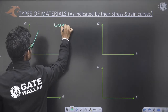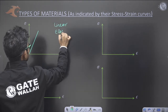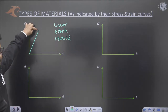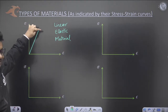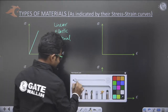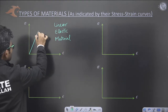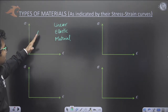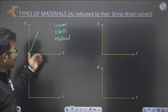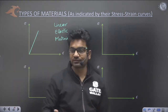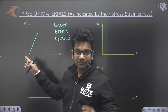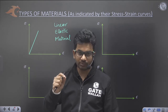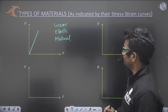In a linear elastic material, the proportional limit, elastic limit — everything — is at the same point. The elastic range is up to that point only. Stress is directly proportional to strain. The area of this triangle gives the modulus of resilience, which equals sigma squared upon 2E.